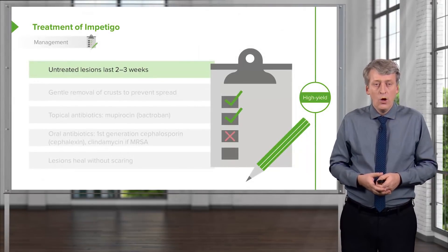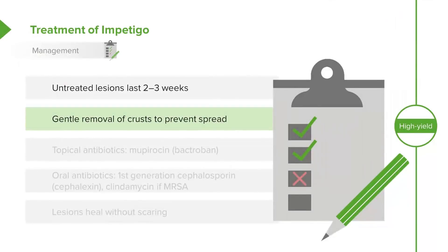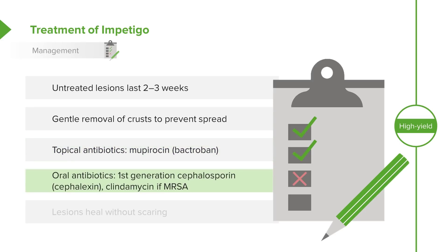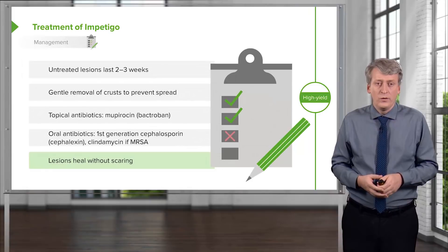How do we treat impetigo? Untreated lesions usually last 2-3 weeks and then generally resolve. We can gently remove the crust to prevent spread and provide topical antibiotics such as mupirocin, which is very effective against staph and group A strep. In severe cases, we may also provide oral antibiotics such as a first-generation cephalosporin like cephalexin, given twice a day, or clindamycin if we're suspecting MRSA or there's invasive disease. Remember, these lesions heal without scarring and generally these patients do well.